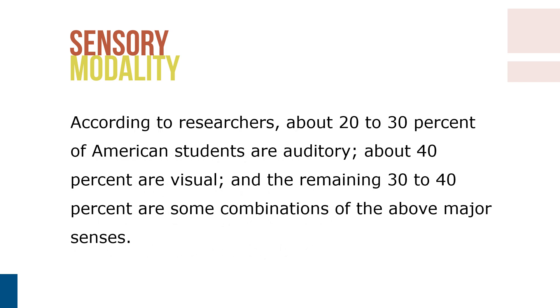According to researchers, about 20–30% of American students are auditory, about 40% are visual, and the remaining 30–40% are either tactile-kinesthetic, visual-tactile, or some combination of the above major senses.